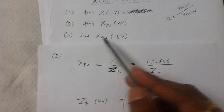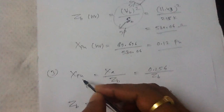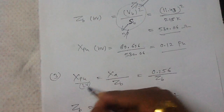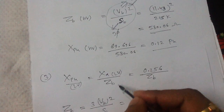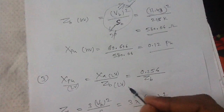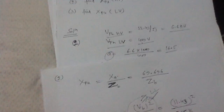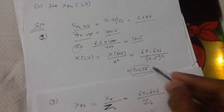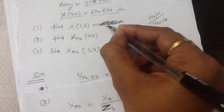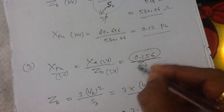For the third question, calculate the per unit reactance referred to the LV side using all LV side values. Take the actual reactance referred to the LV side (0.256 ohm) and divide by the base impedance on the LV side. The base voltages are always the rated values, so on the LV side the rated voltage is 400 volts.